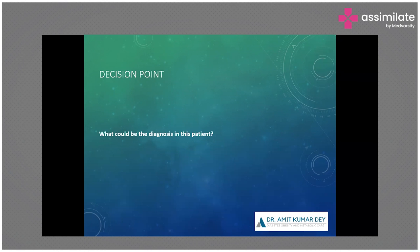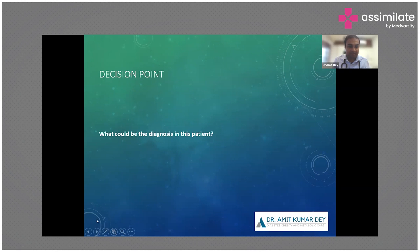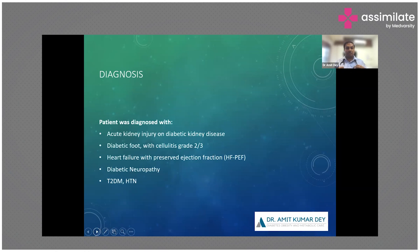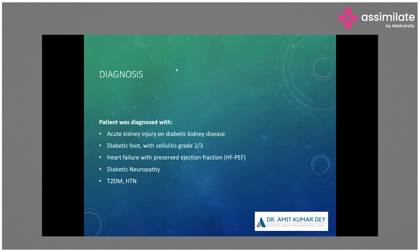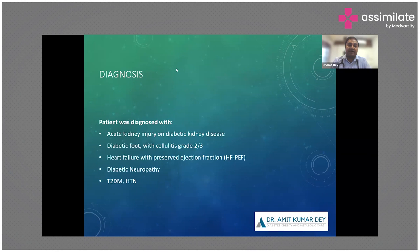Responses included 'multiple organ dysfunction' and 'AKI with multiple organ dysfunction.' The confirmed diagnosis is AKI on diabetic kidney disease — the baseline creatinine is needed to confirm underlying diabetic kidney disease. Also noted is the diabetic foot ulcer, which at this moment appears to be a non-infected ulcer. One participant also rightly identified: diabetes mellitus type 2 with AKI, electrolyte imbalance, neuropathy, and nephropathy.